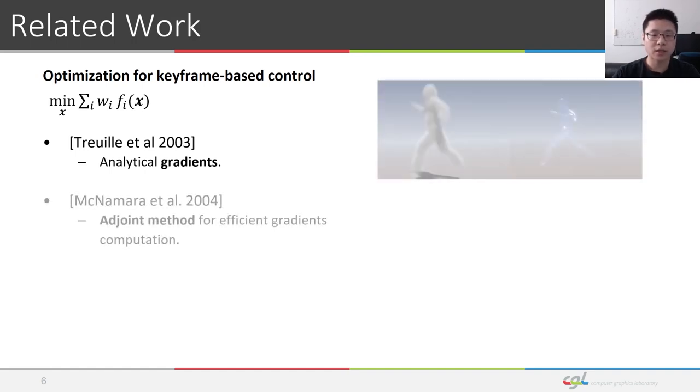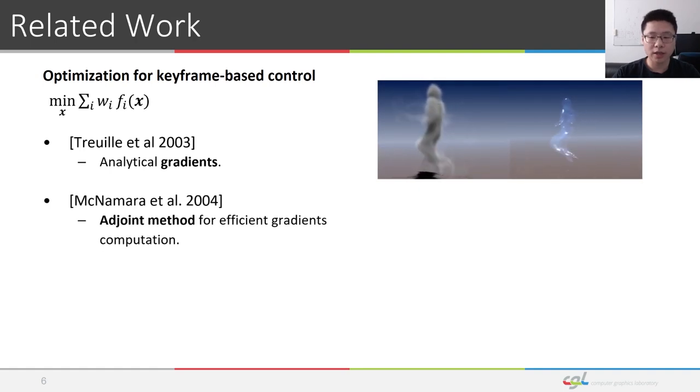McNamara et al. followed up the work of Thierry et al. and noticed that forward pass derivatives could be computed in a dual way by the adjoint method, requiring only one solver evaluation for computing all necessary derivatives. The adjoint method largely improved the efficiency of computing the gradients and enabled the algorithm to handle much more control parameters.